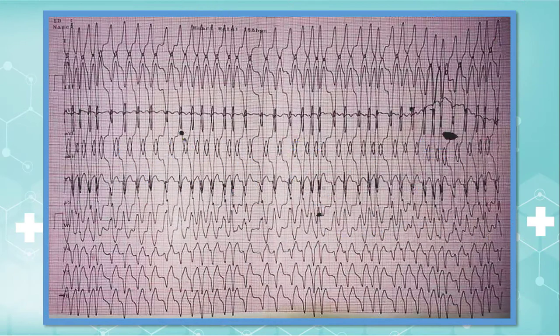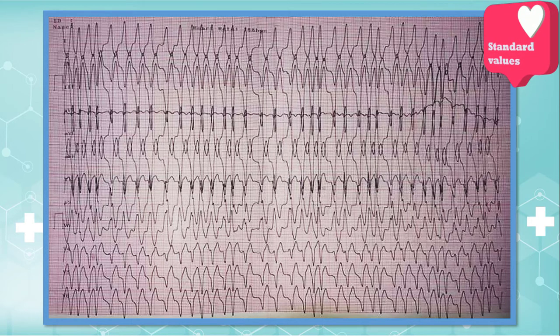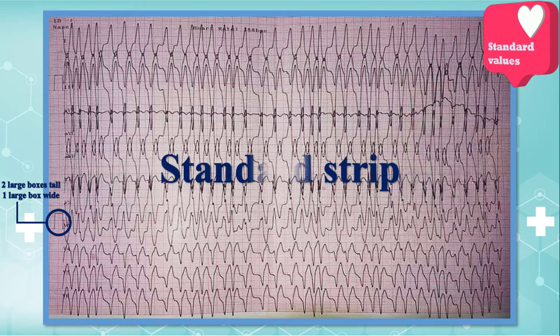As usual, to interpret every electrocardiogram properly, use the 10-step approach. First, go through standard values. The calibration marker measures one large box in width and two large boxes in height, so this is a standard and acceptable electrocardiogram.